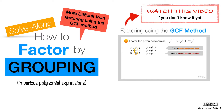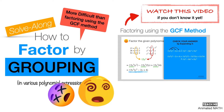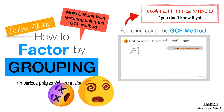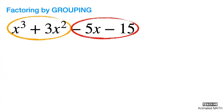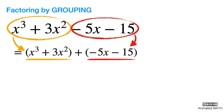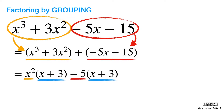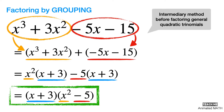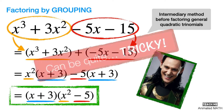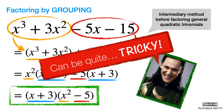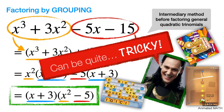Without that knowledge, I can pretty much guarantee that you'll be making confused facial expressions watching any video about how to factor by grouping. Factoring by grouping is often used for polynomials containing four terms, and is somewhat like an intermediary technique before you proceed to factoring general quadratic trinomials. This can be quite tricky at times, so I'd like you to think of it as one of your smartphone or desktop puzzle games.